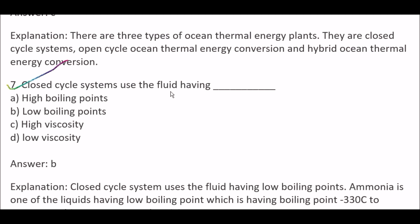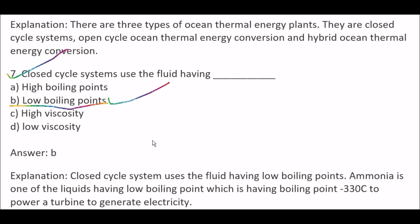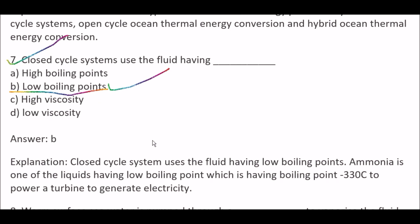Next question: Closed cycle systems use the fluid having — Option A, high boiling points; Option B, low boiling points; Option C, high viscosity; Option D, low viscosity. Right answer is Option B, low boiling points. Closed cycle systems use fluid having low boiling points. Ammonia is one such liquid, with a boiling point of minus 33 degrees Celsius, used to power a turbine to generate electricity.